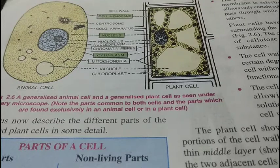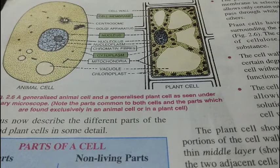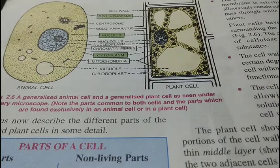The green-colored plastid — chloroplast — is found in green leaves or green stems. The other-colored plastids — chromoplasts — are found in colored parts of the plant body such as flowers. The colorless plastids — leukoplasts — are found in the roots, and their main function is storage.